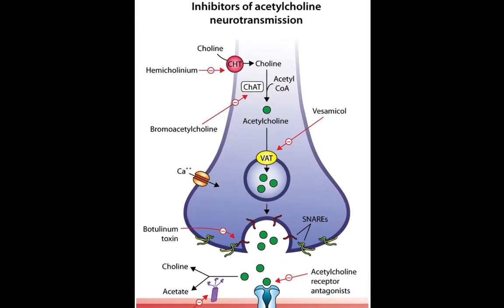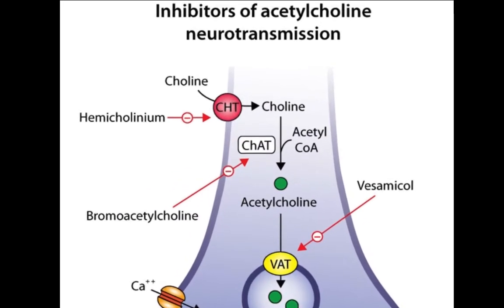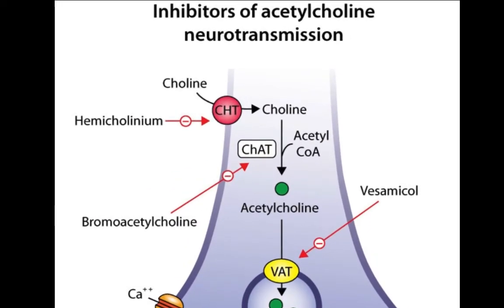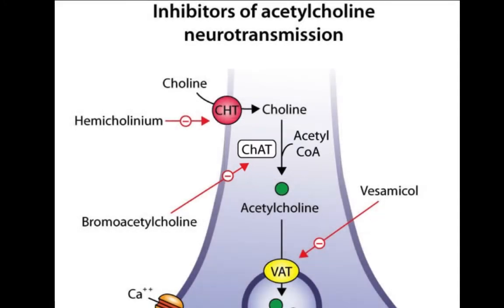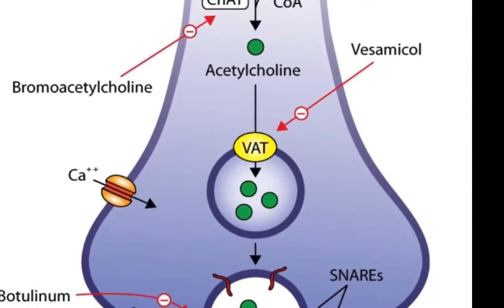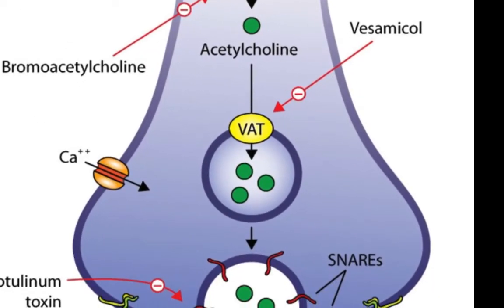Reviewing steps of acetylcholine synthesis until its site of action, we see that the process starts by choline assembly. Then there is addition of acetyl-CoA by help of the enzyme choline acetyltransferase. Now we have acetylcholine synthesized, and the next step is packaging of the formed molecules into vesicles. This step requires the vesicular acetylcholine transporter.